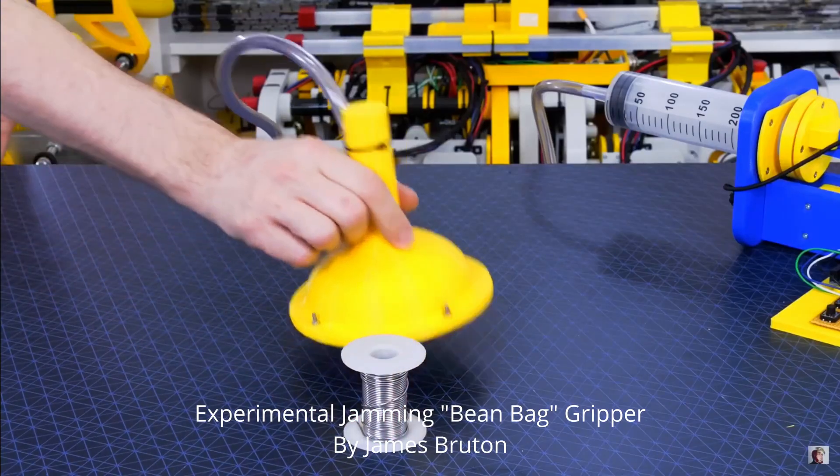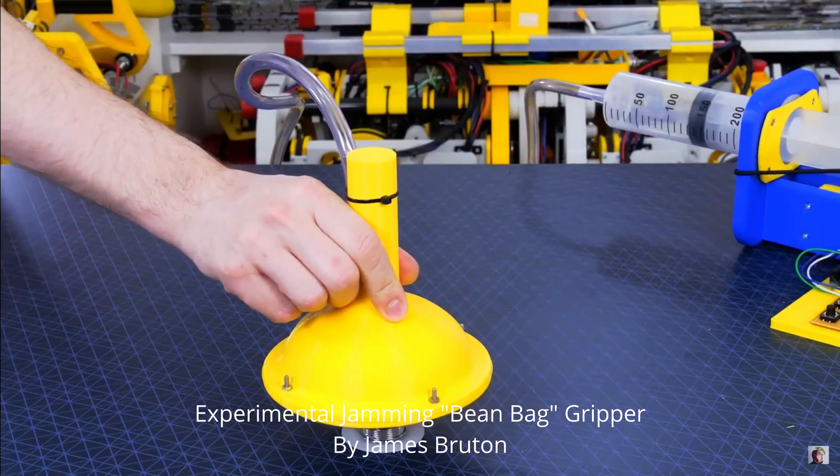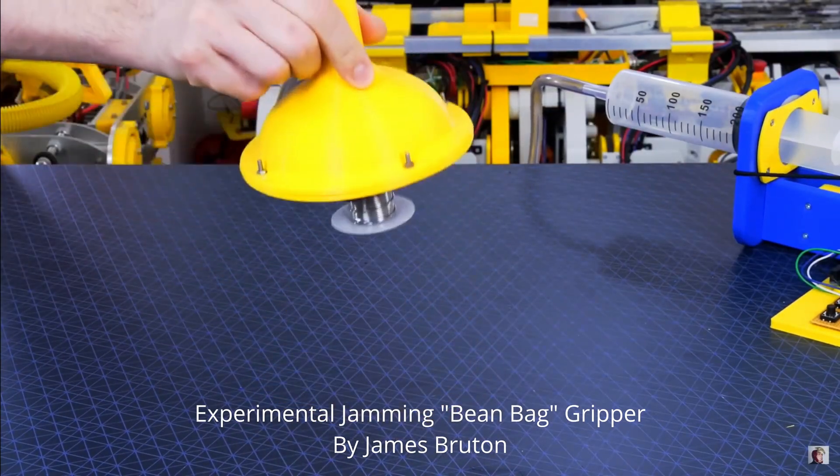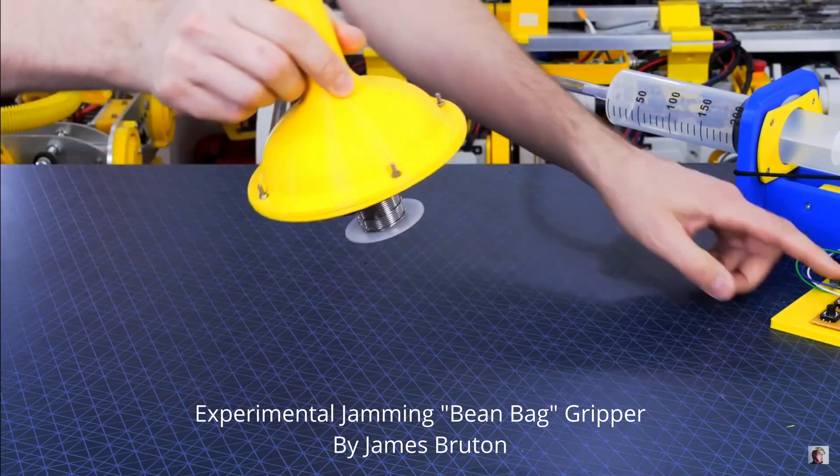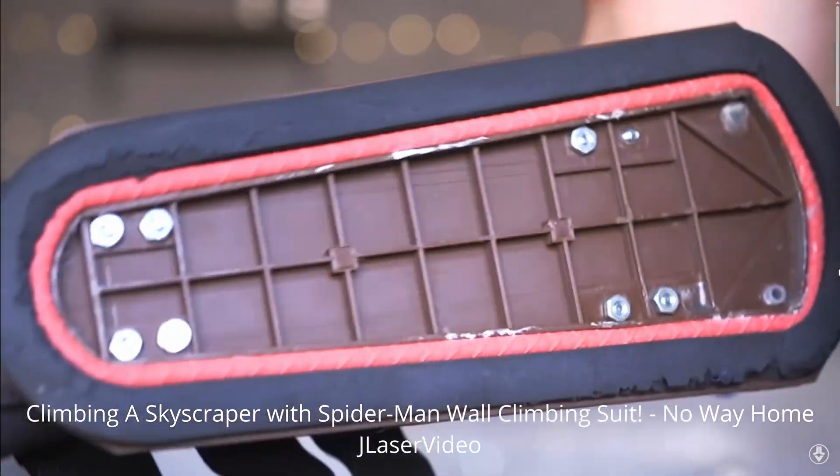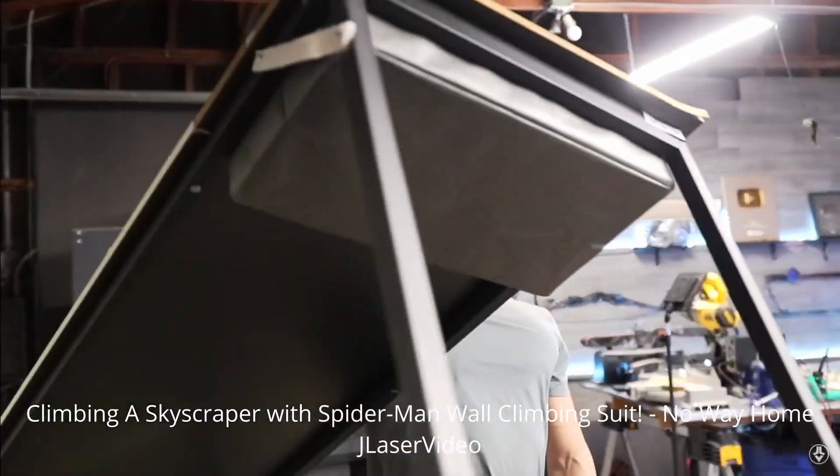James Bruton's jamming gripper and Jay Lazer's climbing rig lit a spark. James Bruton made an excellent example of a jamming gripper, which uses a bunch of BBs and an elastic container under vacuum to grip objects. And Jay Lazer built vacuum packs he mounted to his arms and legs so he could climb walls. I'll link to their video in the description.